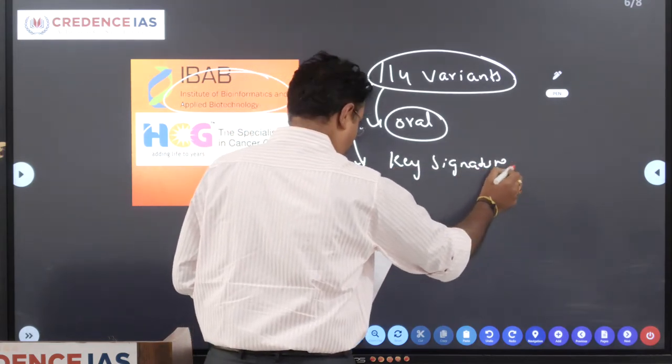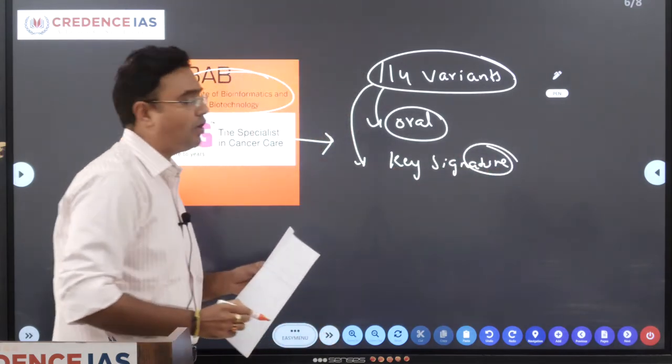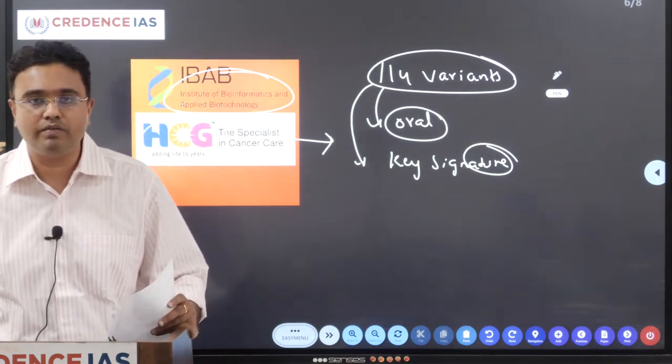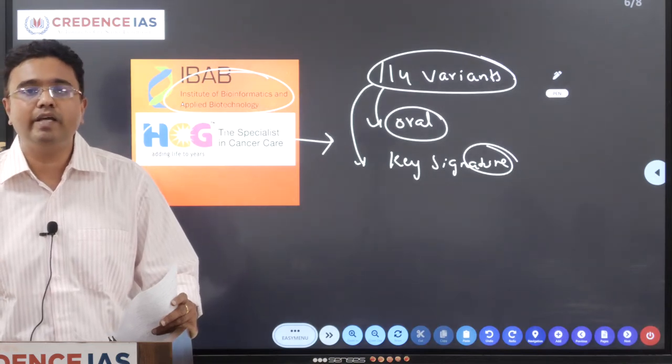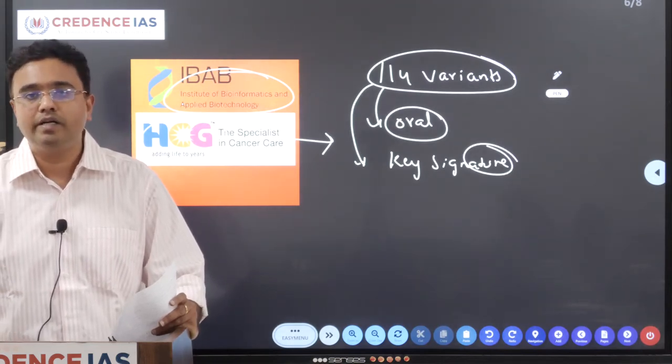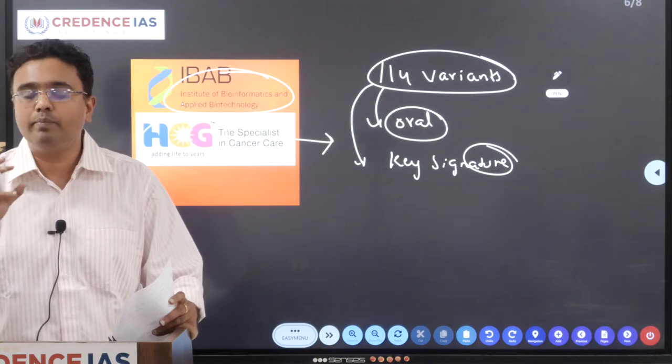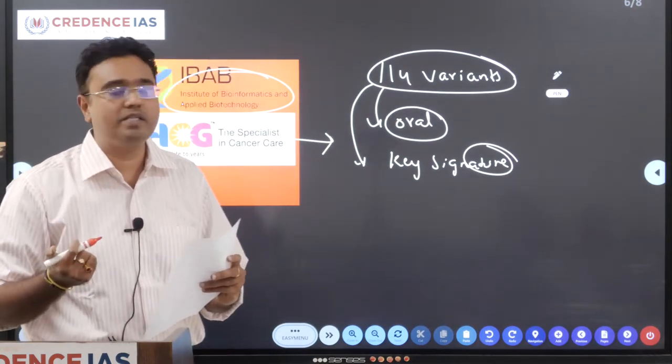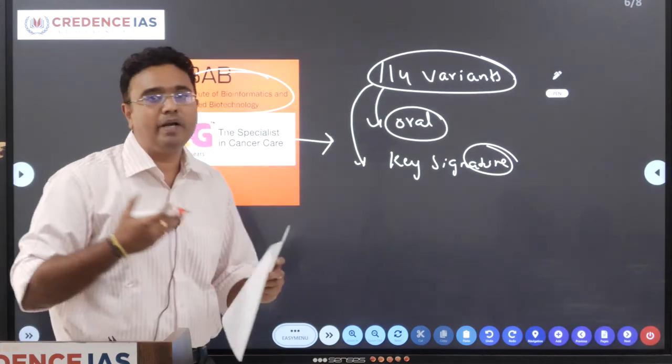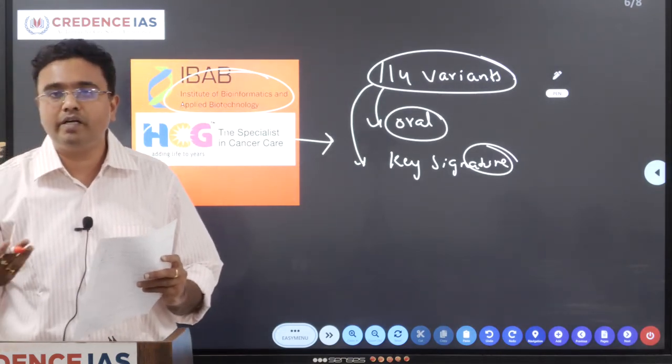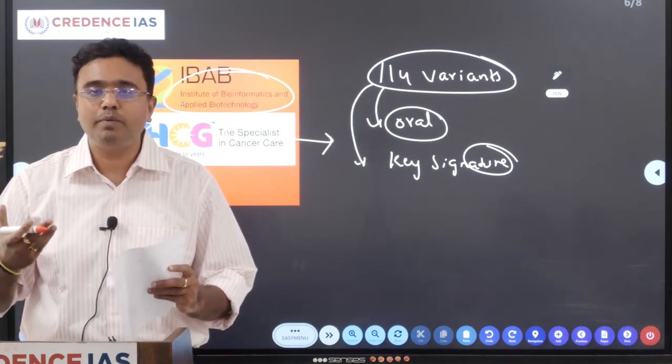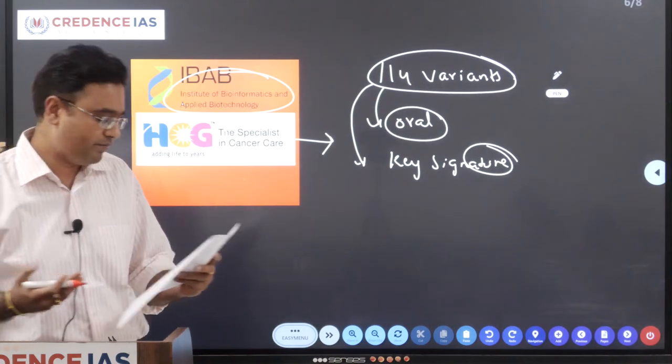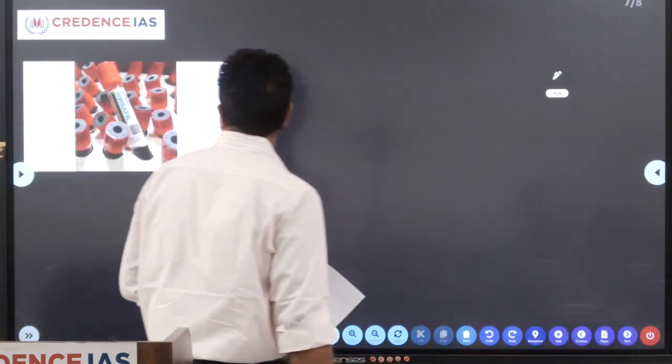And they have also identified the key signatures which predict or indicate the survival rate, how much chances of survival. So with this understanding, now they can better target the treatment, so that they can target the cancerous cells without affecting the normal healthy cells, which helps in better treatment of cancer. And helps the people to overcome the cancer and lead a fruitful and effective life.